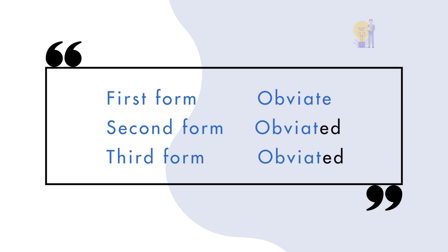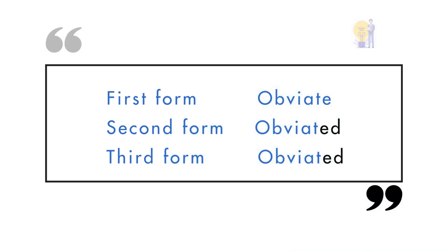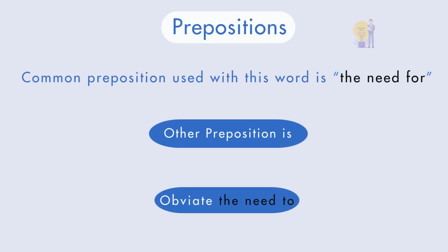The first form is 'obviate', the second form is 'obviated', and the third form is 'obviated'. The common prepositions used with this word are 'the need for' and 'the need to'.